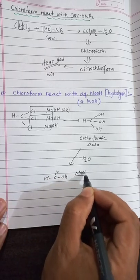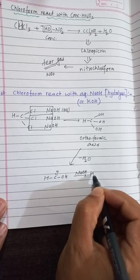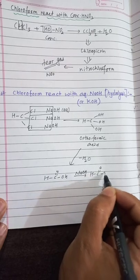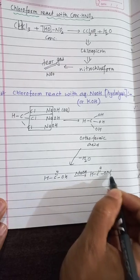Formic acid further reacts with NaOH to give HCOONa — sodium formate.